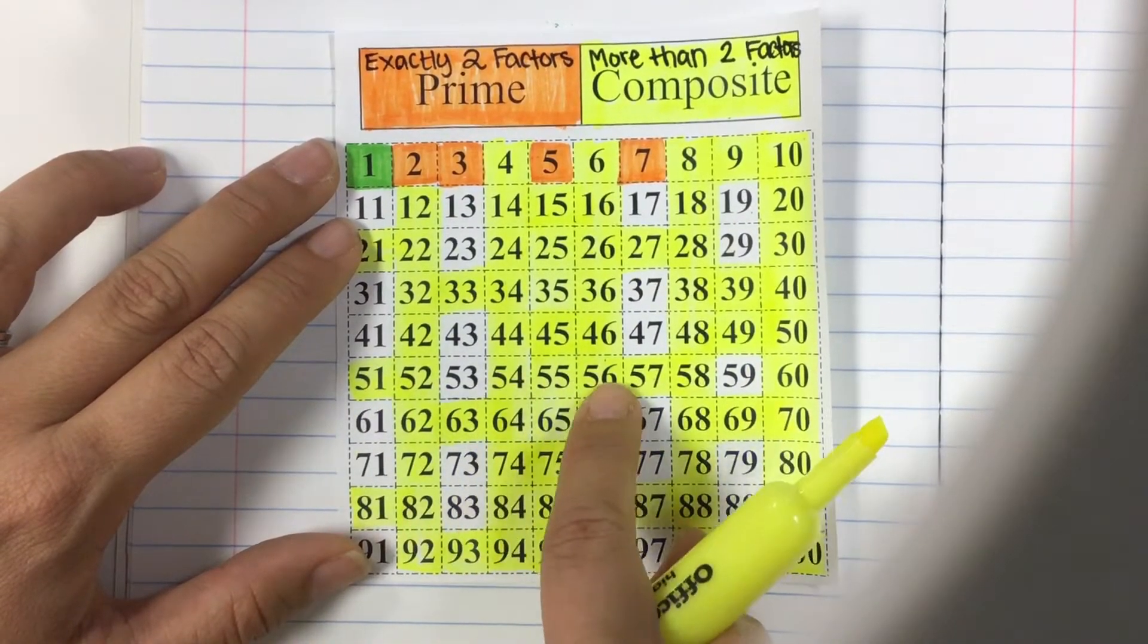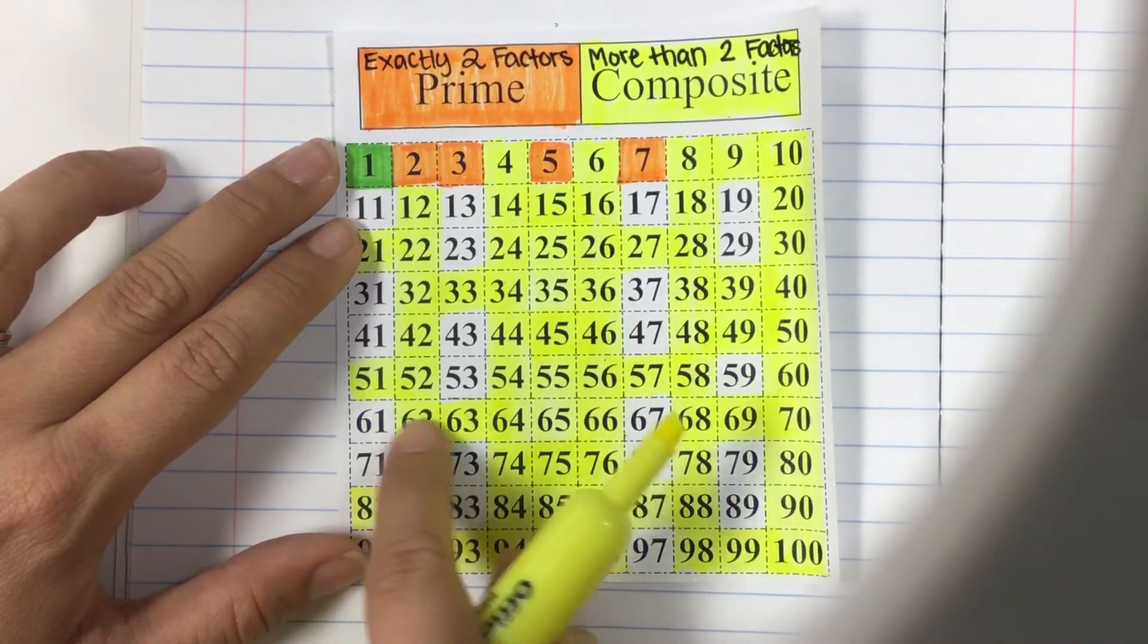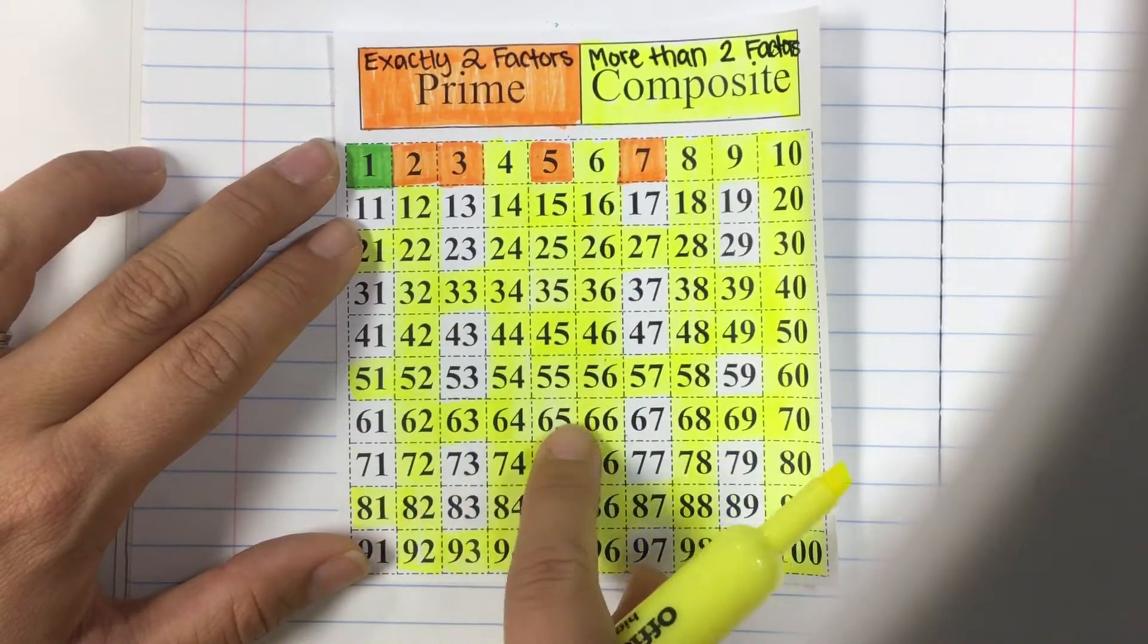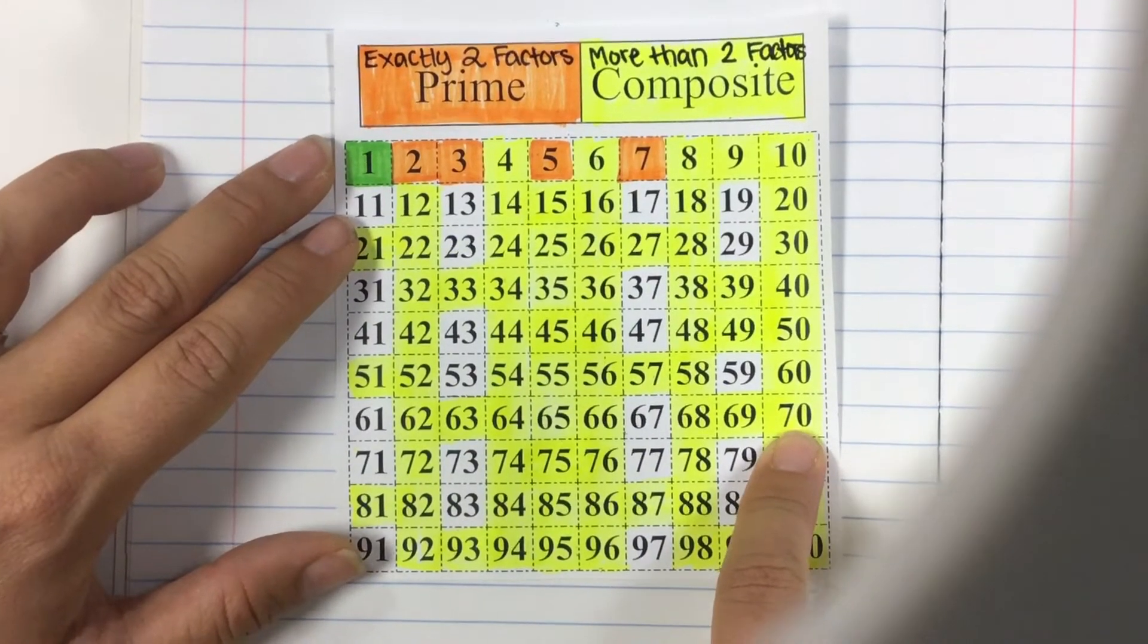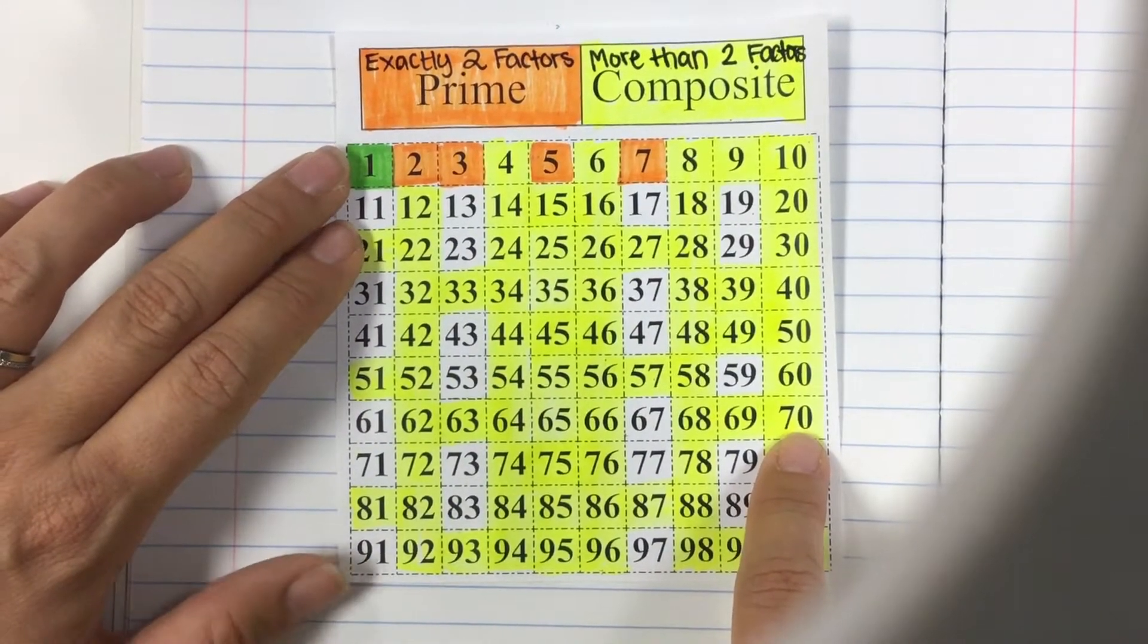Here's a great place to check yourself. 7 times 10 is 70. You should know that so that's a great check.